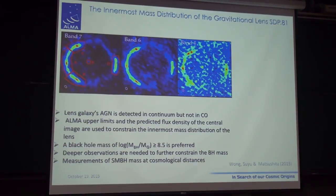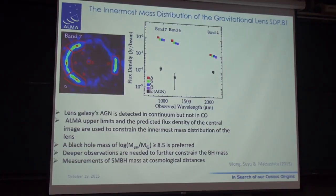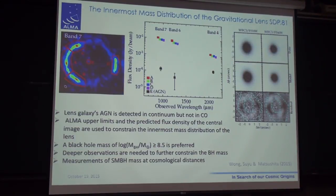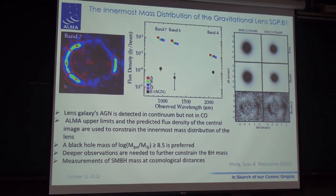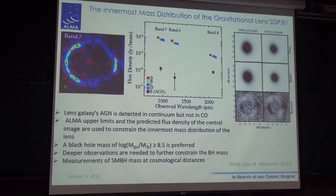By using the upper limits of ALMA in CO, they tried to constrain the innermost mass distribution of the lens. This is the spectrum of HEN, which is very different from the background source. This is the lensing galaxy as seen by the Hubble Space Telescope. What they achieved is to put a limit constraining the massive black hole, which is bigger than 8.5 in these units. Deeper observations are needed, but I think this technique is very promising because it provides a way to measure supermassive black hole masses at cosmological distances directly by modeling emission in the continuum and molecular gas.